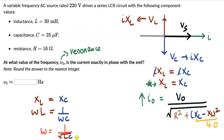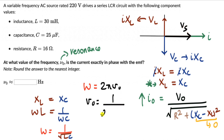We are asked for the frequency V₀, not the angular frequency. Using the relation ω = 2π·V₀, we get 2π·V₀ = 1/√(LC), so the resonant frequency is V₀ = 1 / (2π√(LC)).